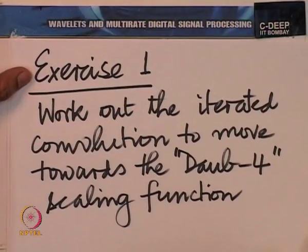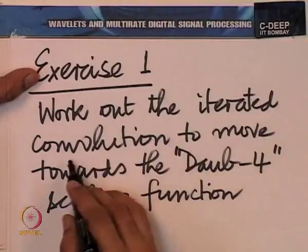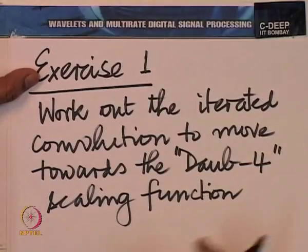Put all those impulse response coefficients as impulses uniformly spaced. Squeeze that set of impulses by a factor of 2, convolve it with the first set. Again squeeze by a factor of 2, convolve again — and this can continue. I leave it as an exercise: work out the iterated convolution to move towards the DOB4 scaling function.